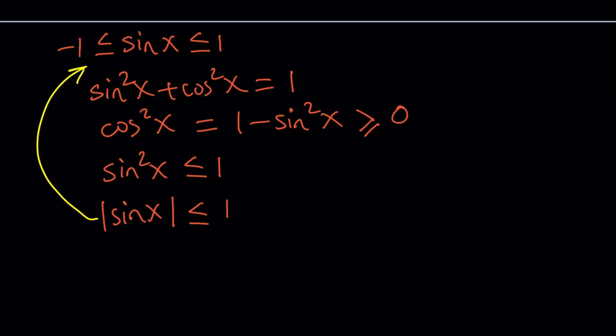And this implies that sine x is between negative 1 and 1 as we mentioned before. So that's what we get from here. And of course, the same thing can be said about cosine x. Those have a lower and upper bound. In other words, they are bounded.